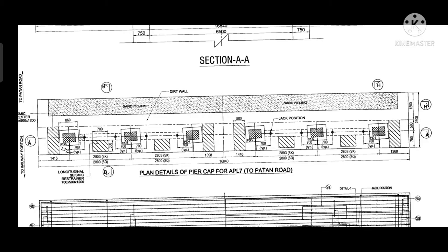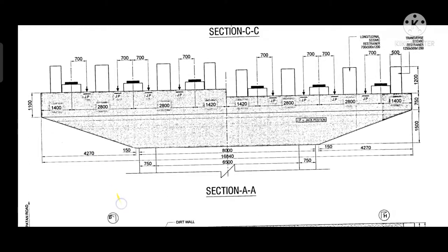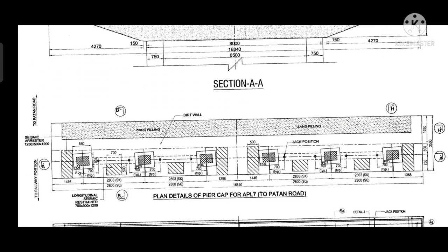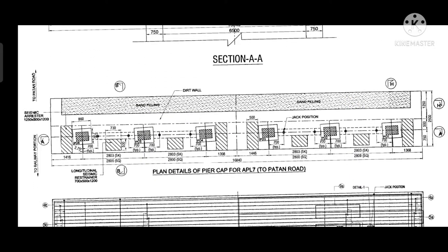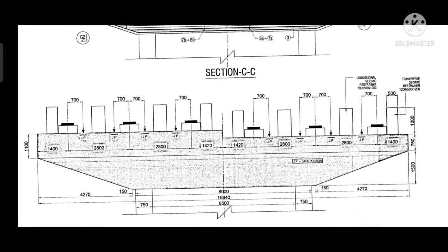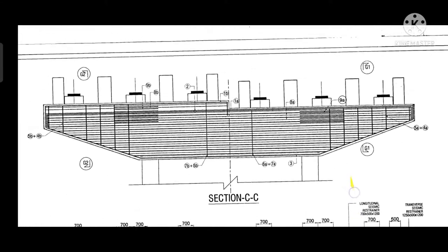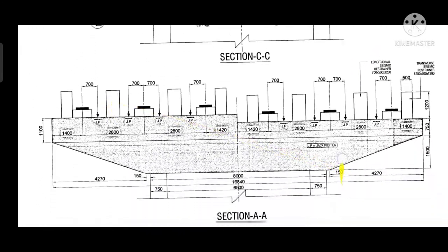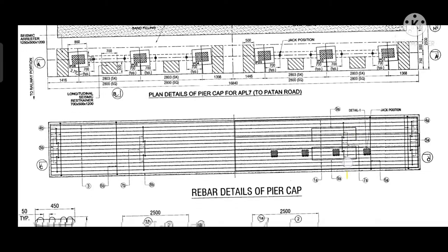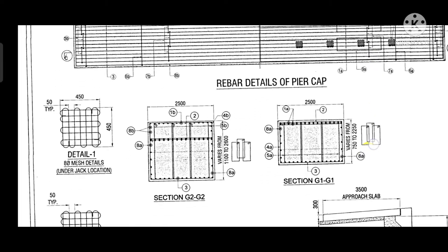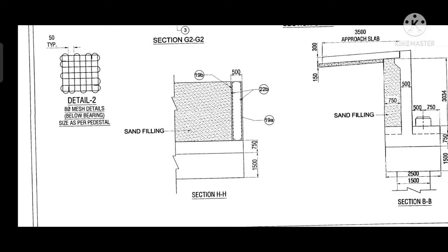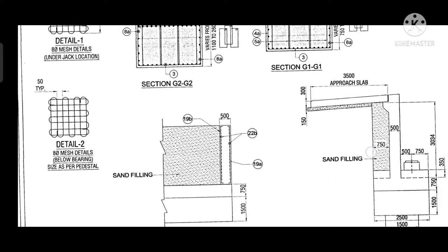In the CC section, all steel bars are given. The position of the bars are given in section CC. We can see all the marks are given, and below the drawing the remark of the bar for each particular section is given in the detail drawing.